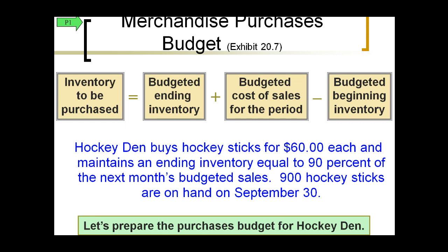A merchandise budget includes inventory that needs to be purchased. It starts with your ending inventory, budgets where your cost of sales will be for the period, and then subtracts your beginning inventory. This gives you what you think you're going to need to purchase, and this information is used in preparation of the purchases budget for the company.